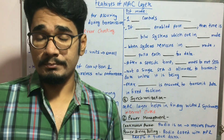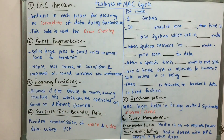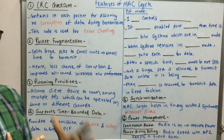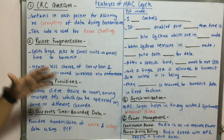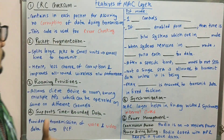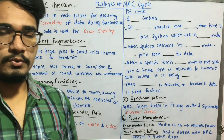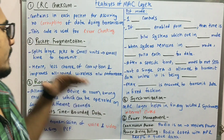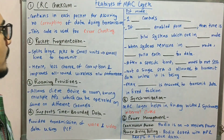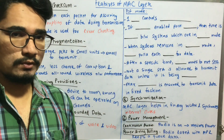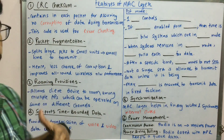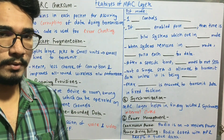Next we have packet fragmentation. Fragmentation in basic terms means dividing any large data into smaller bits so that it can be processed later. Similarly, it splits large packets into smaller subunits, and these smaller subunits take less time to transmit. If the packet fragmentation provision is present in the MAC layer, it reduces the chance of corruption and hence improves the overall wireless network performance.